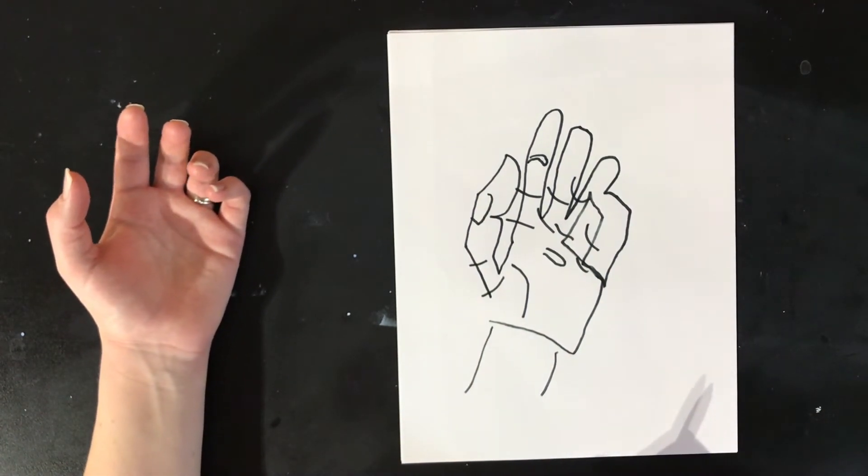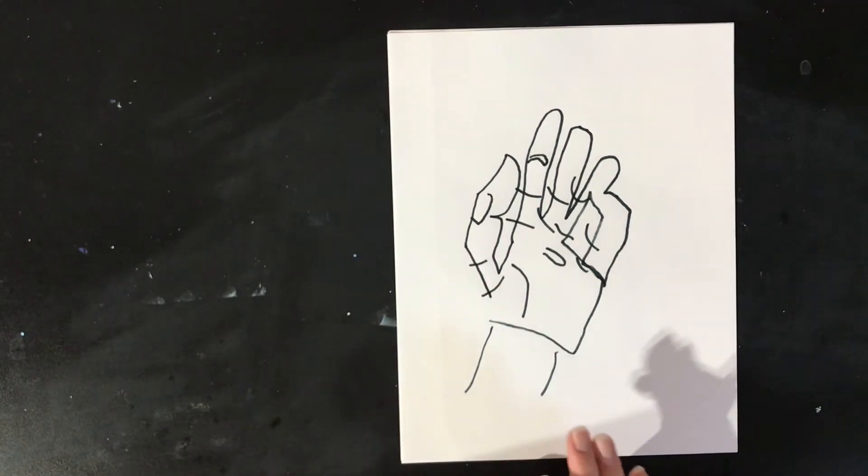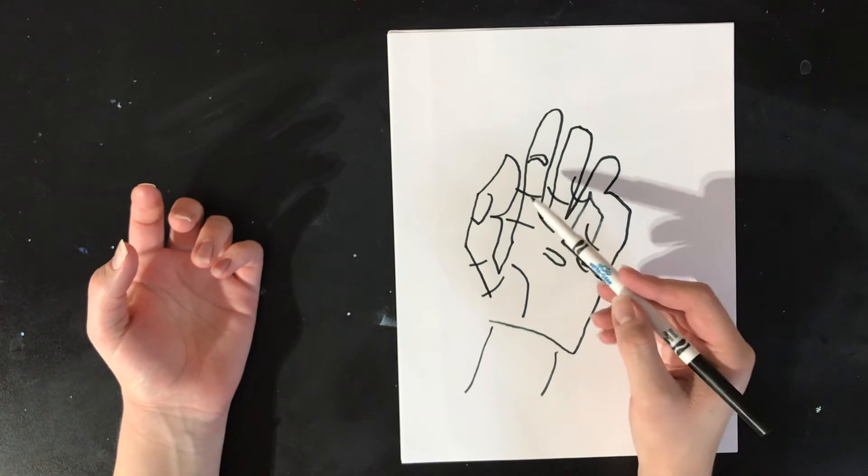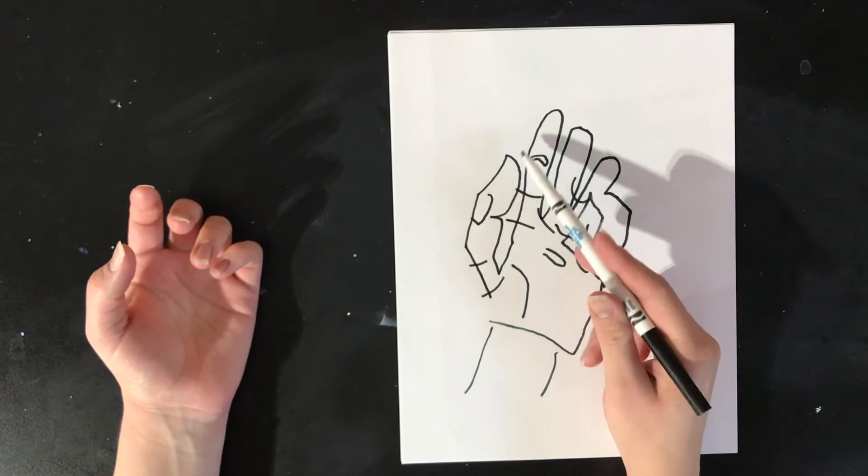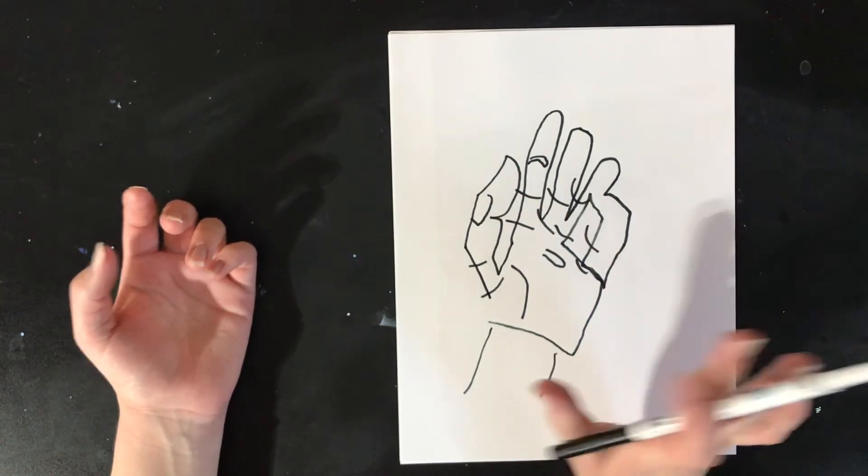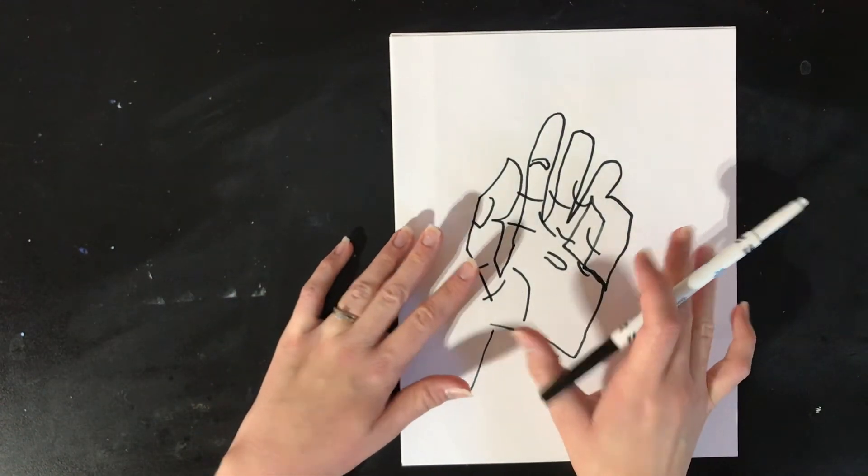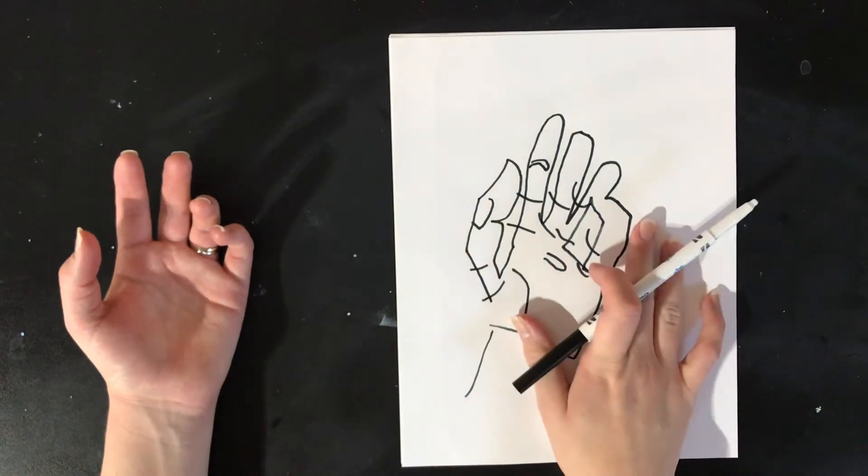That is my blind contour drawing of my hand and as you can tell you can kind of see parts of it like you can see where my fingers are and where my thumbnail ended up on the knuckle instead of at the top of the thumb, and that's just fine because I'm not worried about this looking good. I'm just worried about training my eye to look at what I'm drawing instead of looking at my paper.